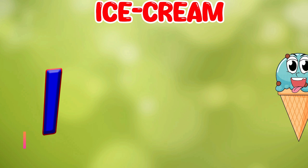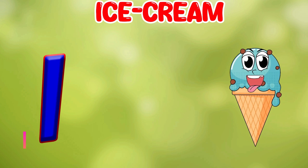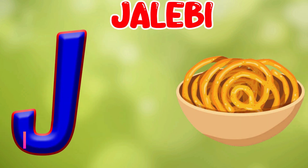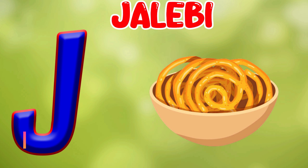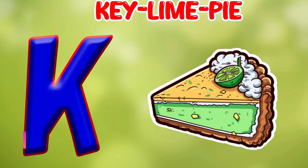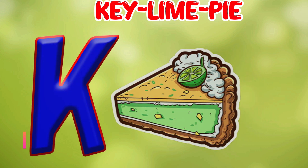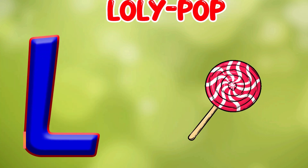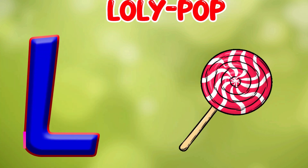I is for Ice Cream. I. Ice Cream. J is for Jelly Bean. J. Jelly Bean. K is for Key Lime Pie. K. Key Lime Pie. L is for Lollipop. L. Lollipop.